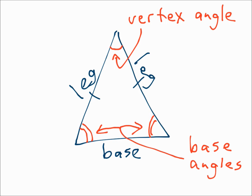Vice versa, if you know that a triangle has two congruent angles, draw to the opposite side and those two sides are congruent — so it works both ways. In a triangle, if two sides are congruent, then the angles opposite those sides are congruent. And if two angles are congruent, then the sides opposite those angles are congruent.